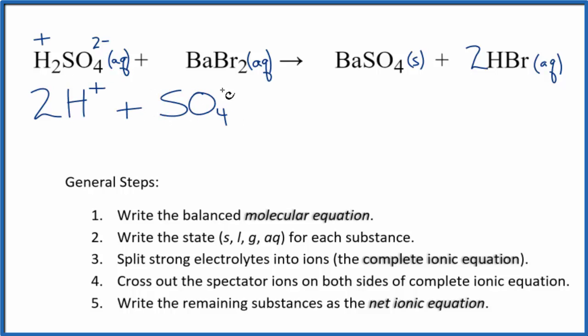Barium's in group 2, that'll be 2 plus, and the bromide ion is 1 minus. So we'll have our barium ion, Ba 2 plus, and then we'll have two bromide ions, Br minus. These are the reactants in our net ionic equation.